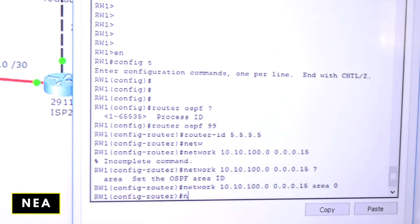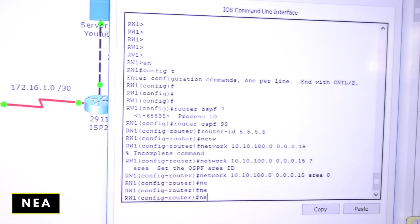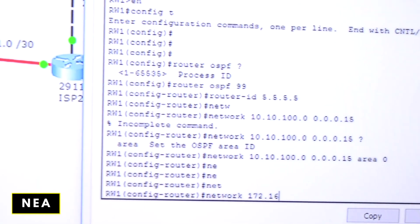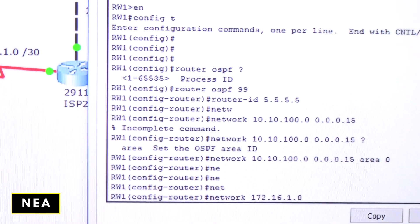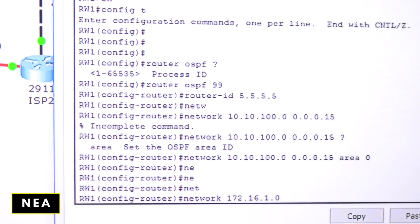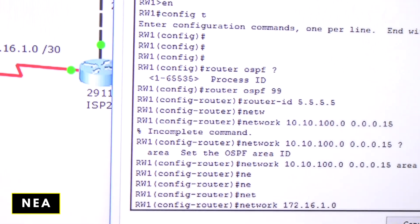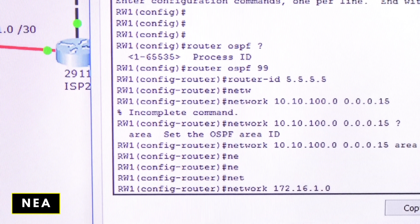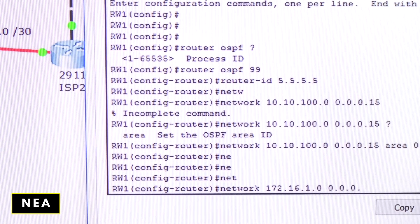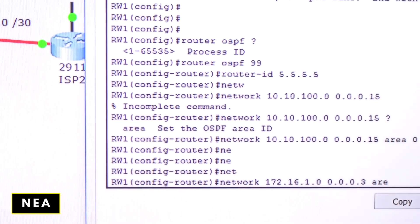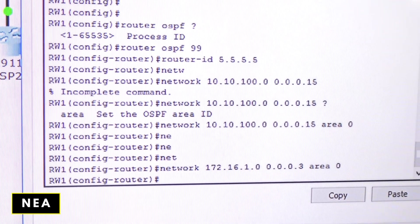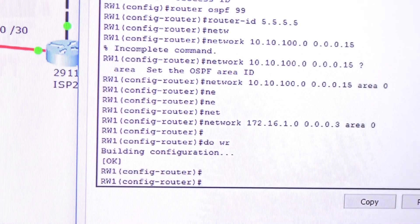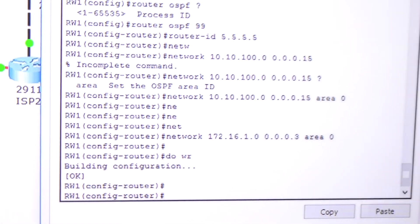So now let me do the other one fast. Network. And that's 172.16.1.0. That's the network that I want to advertise. Based on the subnet mask 255.255.255.252, I need to do the opposite for the wildcard mask. That will be 0.0.0.3. And then the same area zero, enter. Boom. That's it so far. Good.